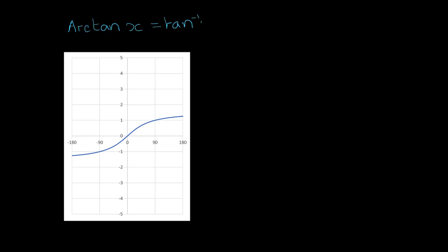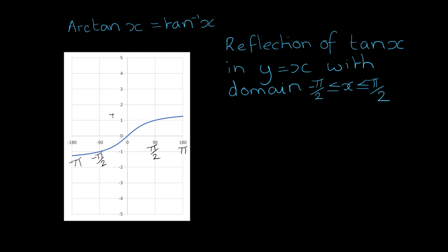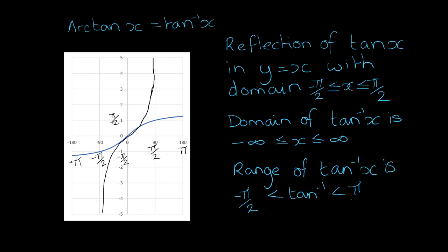Also, arc tan x is the same as tan to the minus 1 x. This graph also is a reflection of tan x in y equals x, with the domain restricted between minus pi over 2 and pi over 2. Let me draw in tan x for you. The domain of arc tan x goes between minus infinity and infinity, and the range of tan to the minus 1 x, or arc tan, is minus pi over 2 to pi over 2.